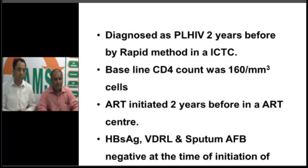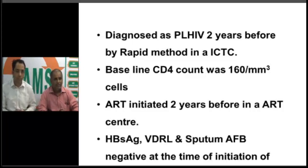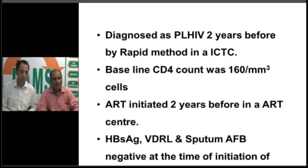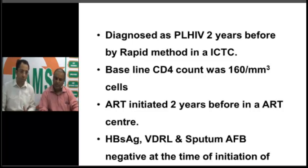He was diagnosed as PLHIV two years ago by a rapid method at an ICTC — a NACO-approved government center with excellent quality control. His baseline CD4 count at that time was 160, which was already low. ART was started at a government ART center. At initiation of ART, routine baseline tests including Hepatitis B, VDRL, and sputum AFB were all negative.